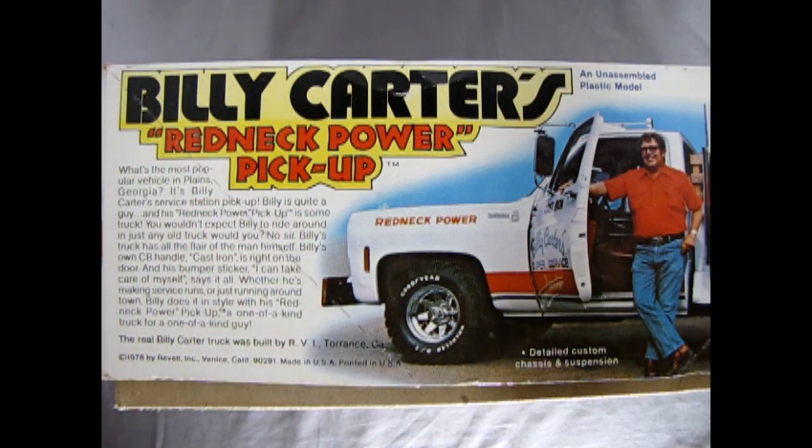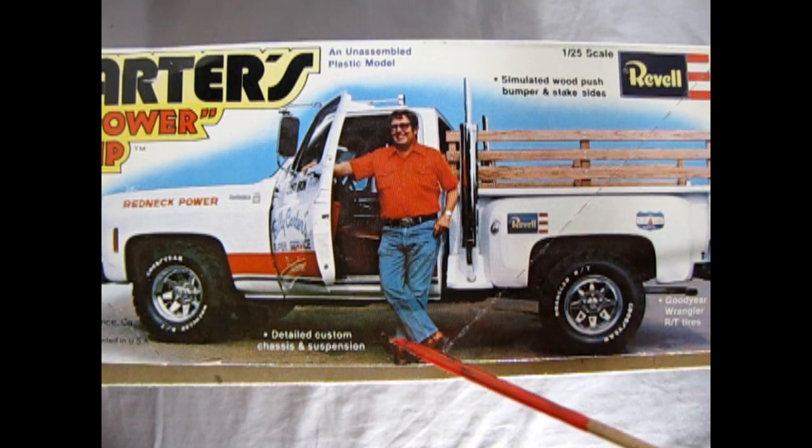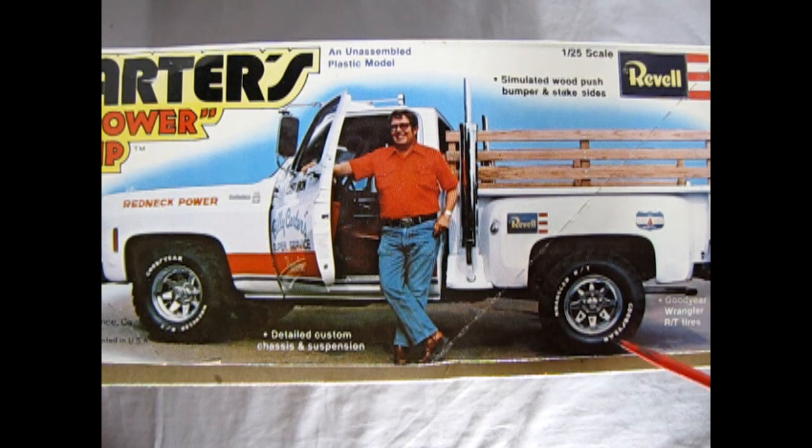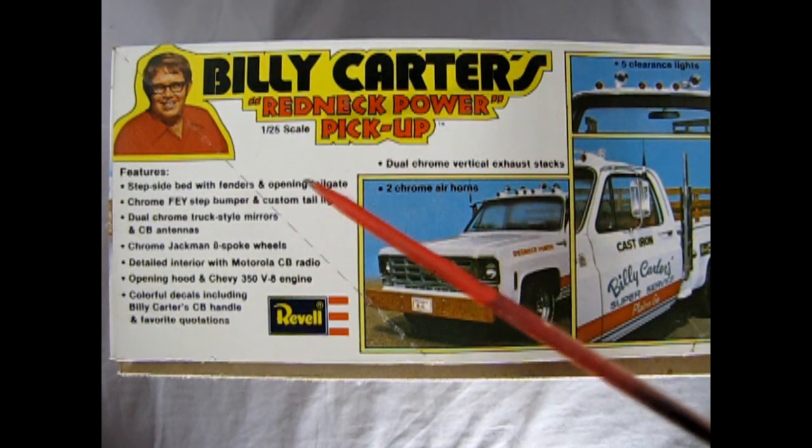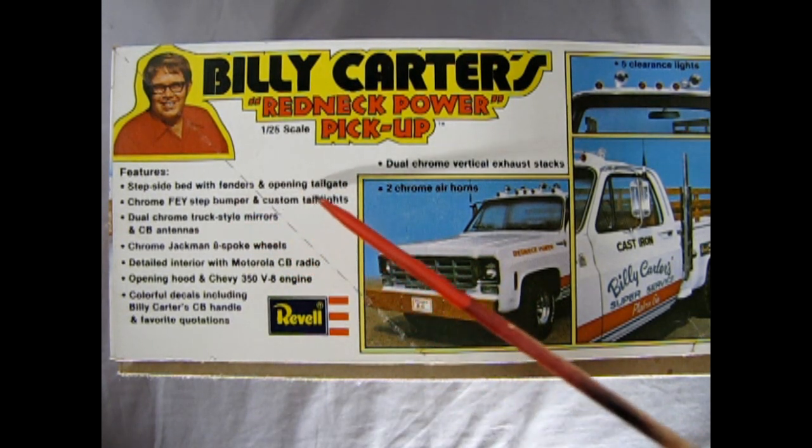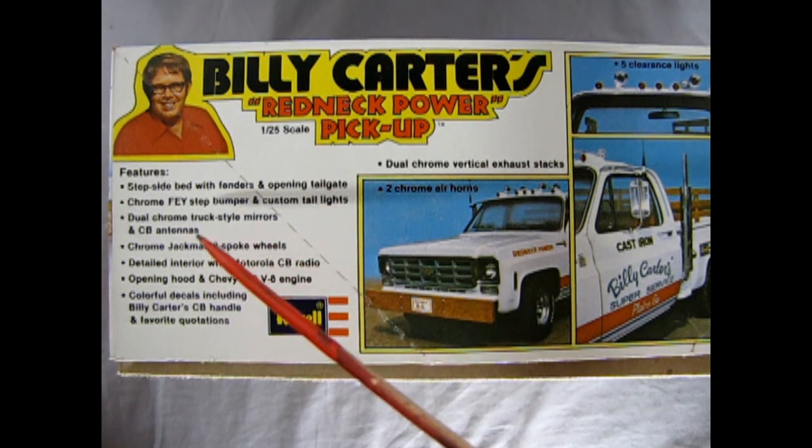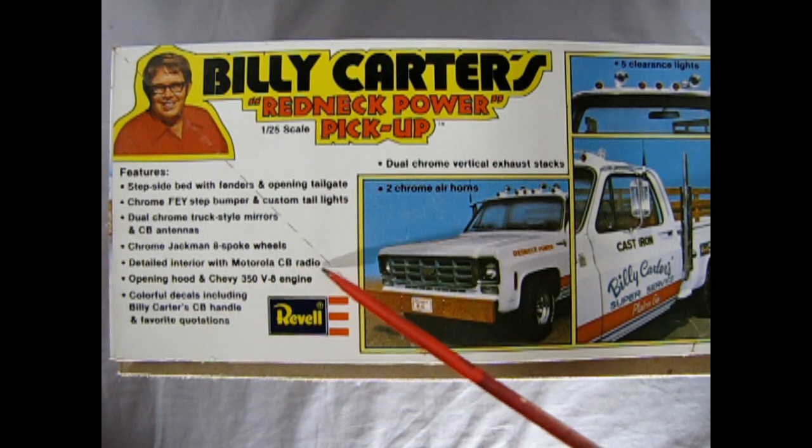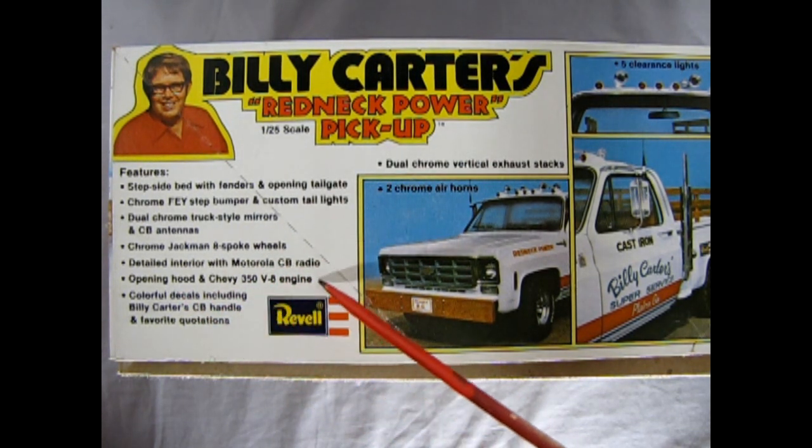Billy Carter's Redneck Power Pickup came out in 1978 by Revell and here we have this write-up which I will leave in the description box down below so that you can read it on your own spare time. This is an unassembled plastic model kit which includes a detailed custom chassis and suspension, simulated wood push bumpers and stakes sides and Goodyear Wrangular RT tires. Along with the mentioned features we also have a step side bed with fenders and opening tailgate, chromed fae step bumper and custom taillights, dual chrome truck style mirrors and CB antennas, chrome Jackman eight spoke wheels, detailed interior with Motorola CB radio, opening hood and Chevy 350 v8 engine.